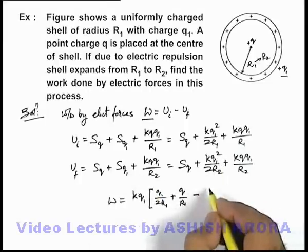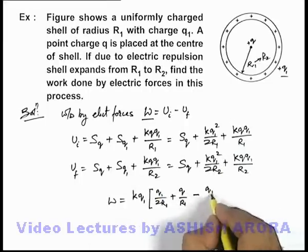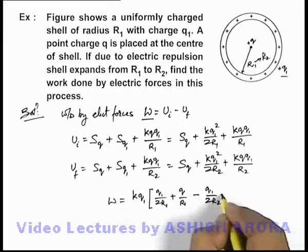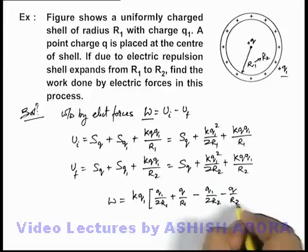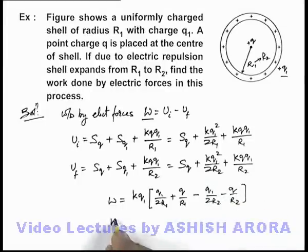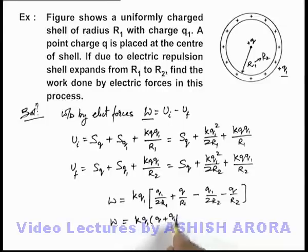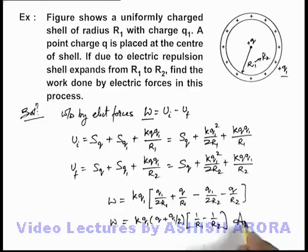Minus from the final energy we can write q₁ by 2R₂ minus q by R₂. And on simplifying the expression, this work done can be written as kq₁ times (q plus q₁ by 2) multiplied by (1 by R₁ minus 1 by R₂). That will be the answer to this problem.